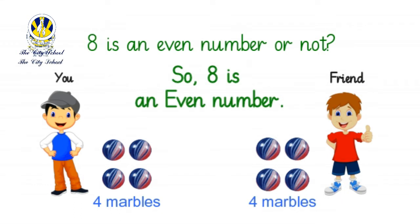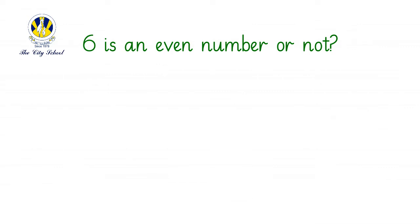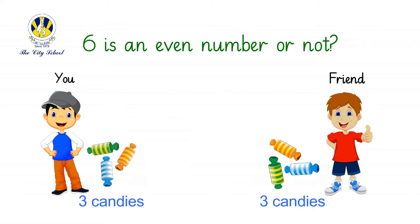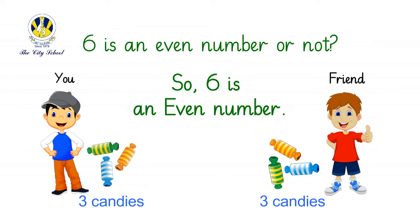Let's look at another example. Let's see if six is an even number or not. You have six candies. Can you share them with your friend equally? Let's see. Superb! You can give three to your friend and keep three with you. So six is an even number, as we can share six things equally between two people.